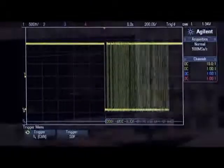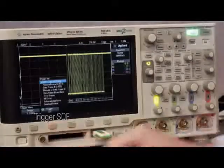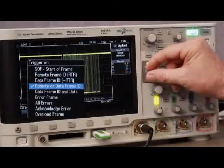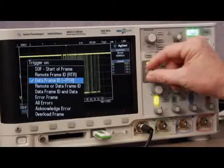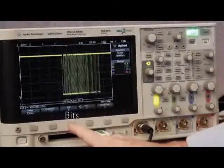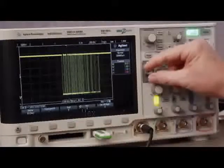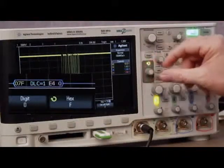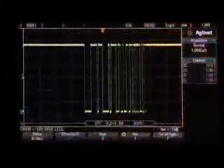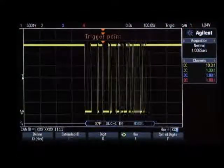Besides triggering on the start of any frame, this scope provides a variety of CAN trigger conditions to choose from. Let's select a trigger on a data frame with a specific ID. Then dial in a frame ID value, in this case 07F. We have now established a stable trigger condition.